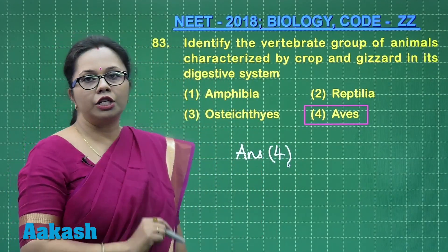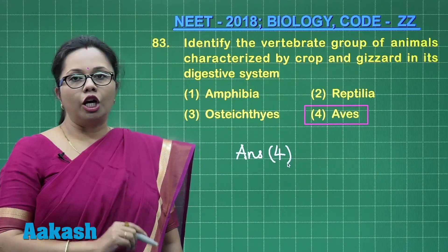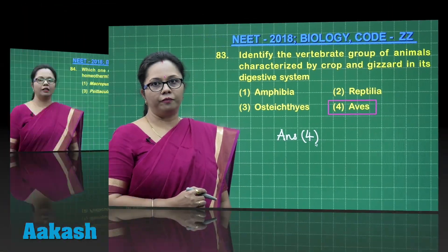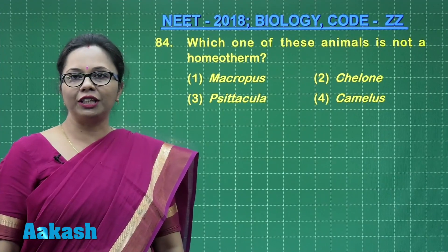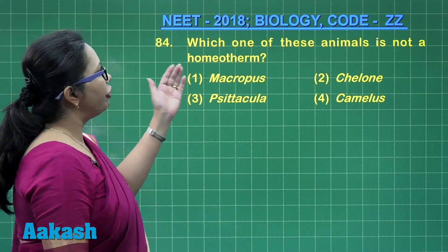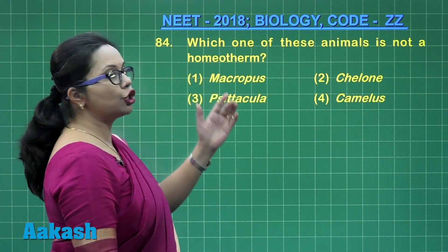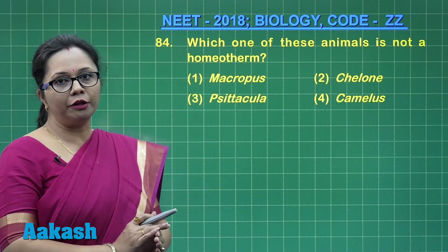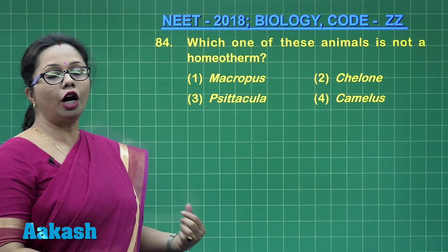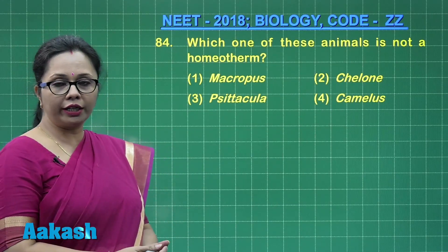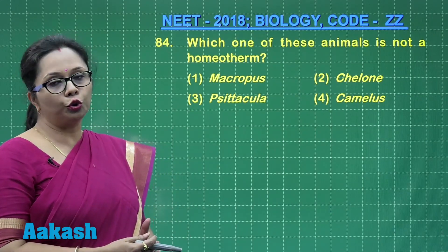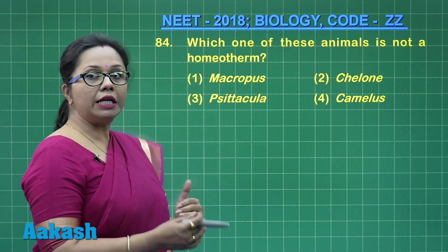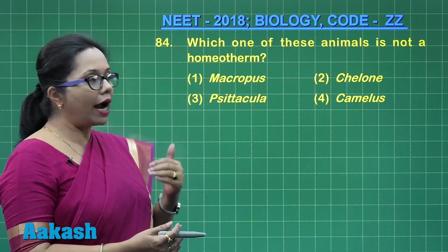So the correct answer is the group Aves, and option 4 is our answer. Moving to question 84: which one of these animals is not a homeotherm? Homeotherms are warm-blooded animals that maintain a constant body temperature irrespective of the external environmental temperature.